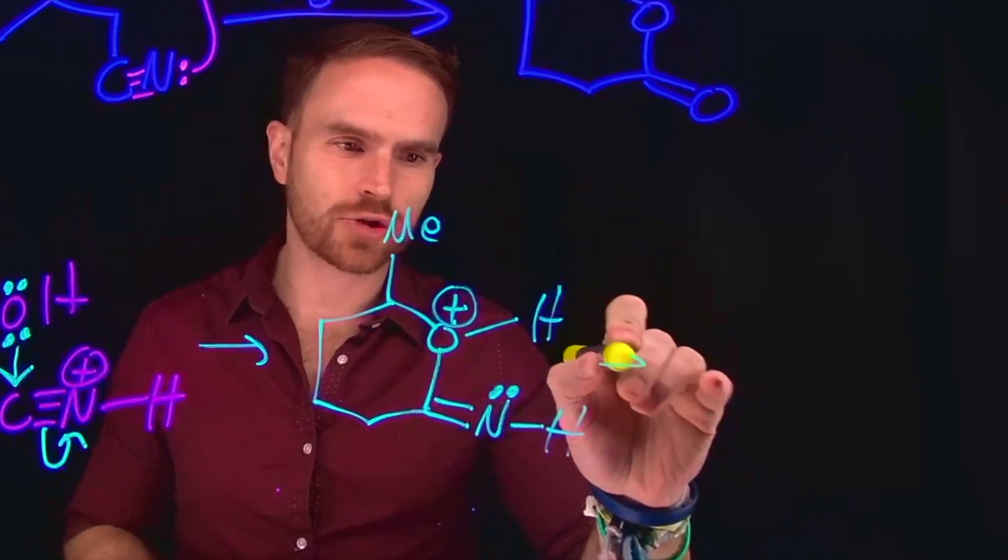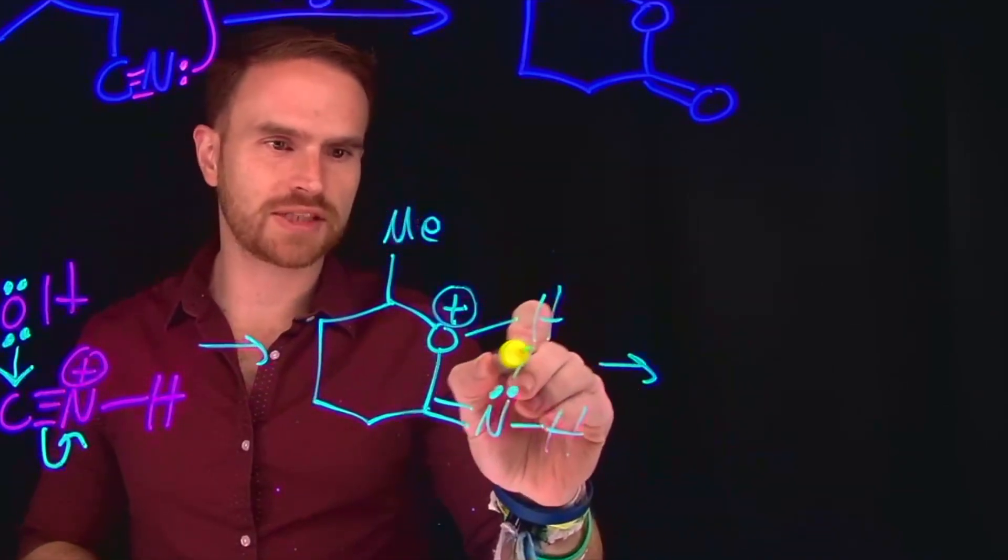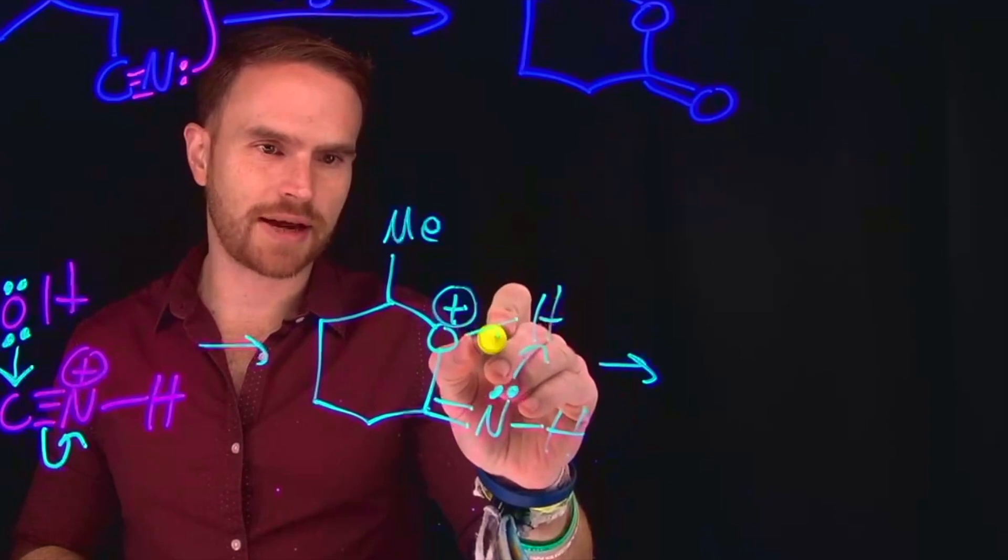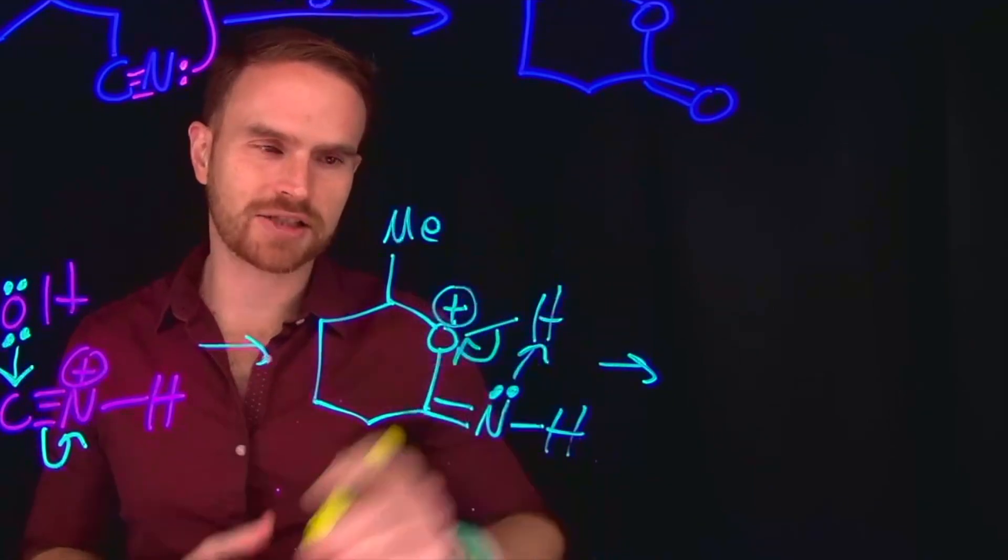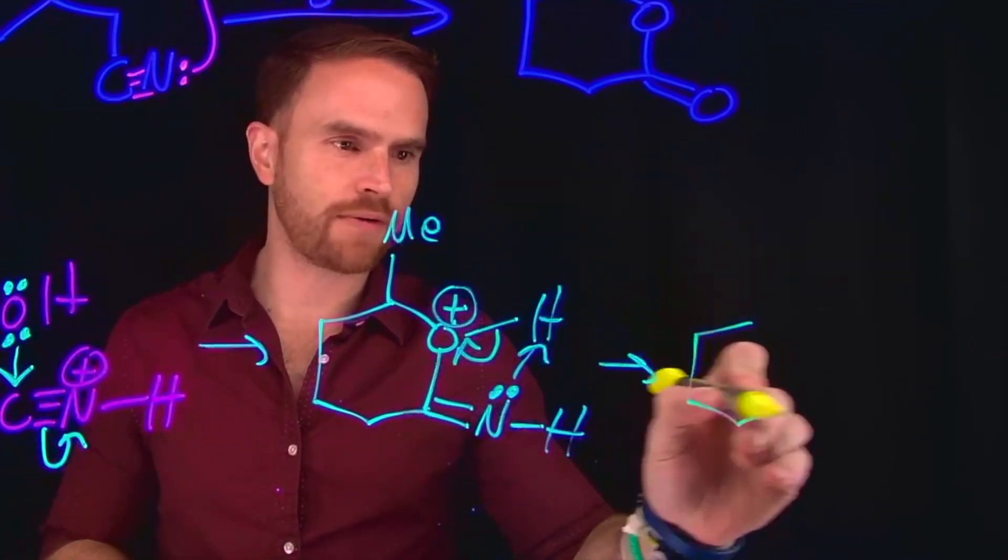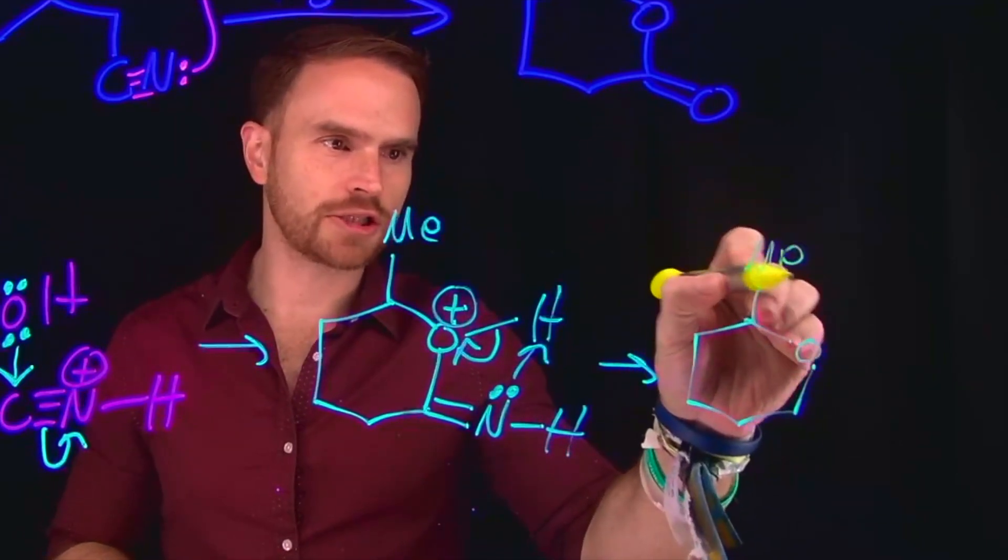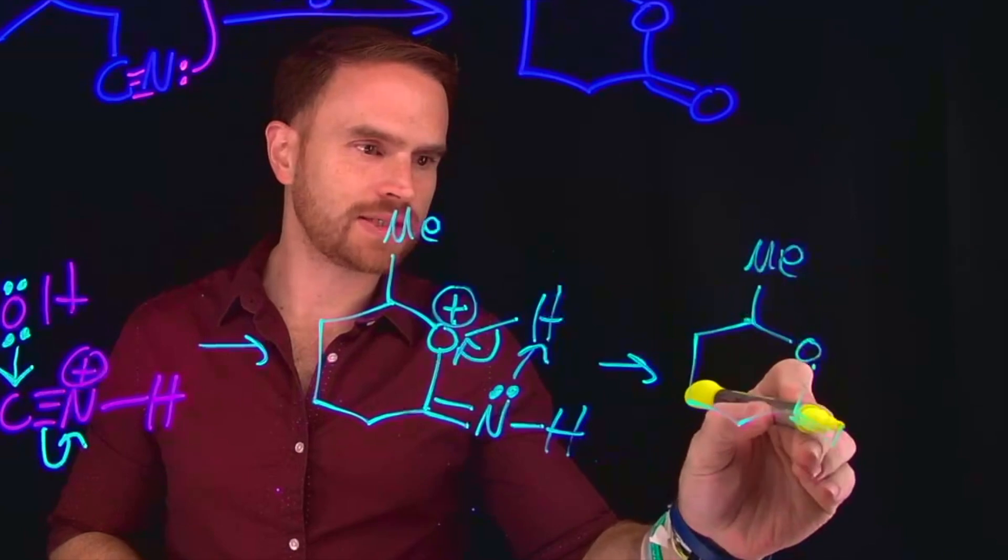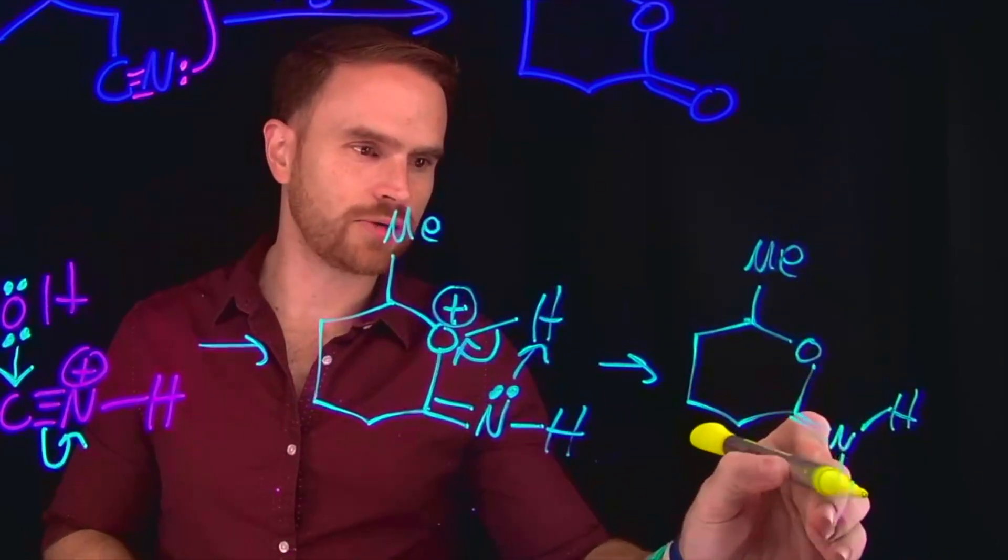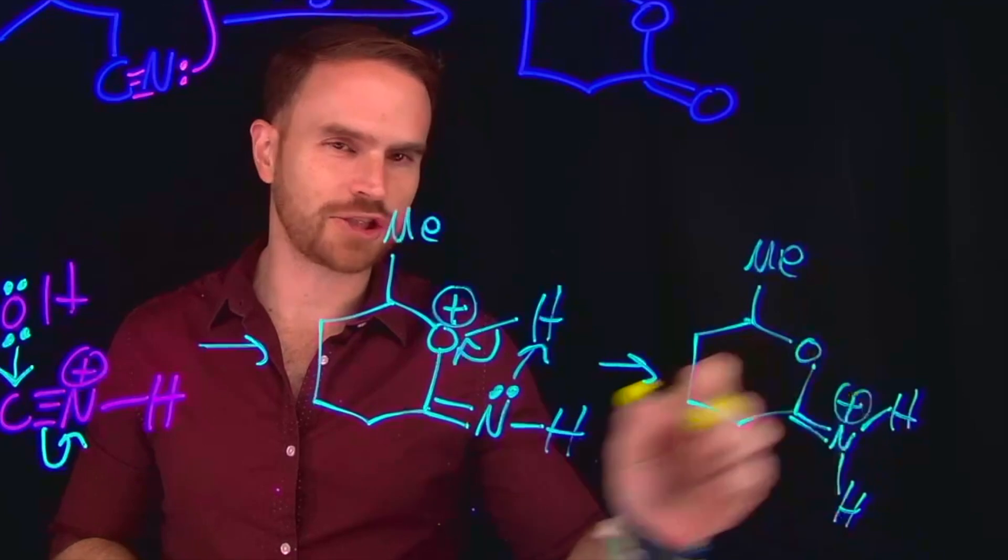So what we can actually have happen next is an intramolecular proton transfer, where this nitrogen comes and deprotonates that hydrogen to make this oxygen neutral, giving us a different five-membered ring, where instead of the oxygen being positively charged, now our nitrogen is positively charged. So now this nitrogen has two hydrogens on it, which is going to make it positively charged.